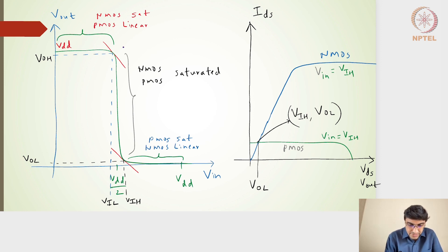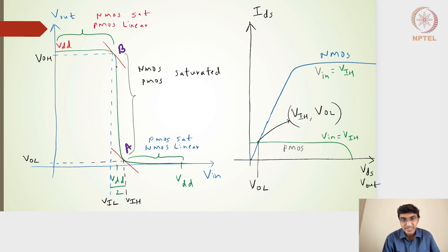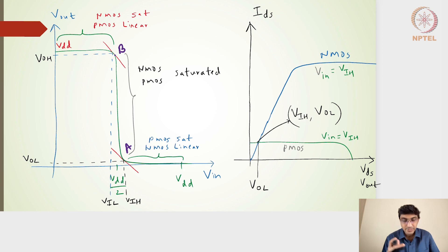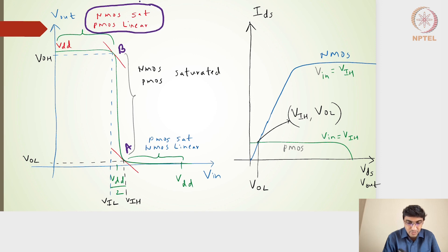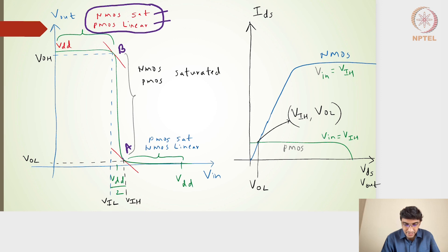These two points — point B and point A — are intersection points on the transfer characteristics derived from the IV characteristics of the NMOS and PMOS. The region around point B corresponds to PMOS in linear and NMOS in saturation, so point B is closer to 0 volts. Point A lies in the region where PMOS is in saturation and NMOS is in linear.